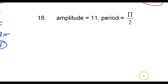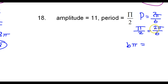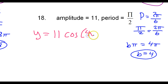Number 18. The period is 2 pi over b. The period is pi over 2, so pi over 2 equals 2 pi over b. Cross multiplying gives b pi equals 4 pi. Dividing by pi on both sides, the pi's cancel, and b equals 4. So the equation becomes y equals 11 cosine of 4x.